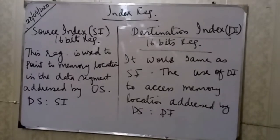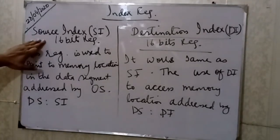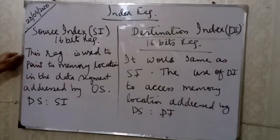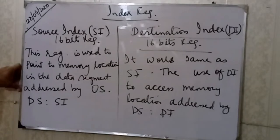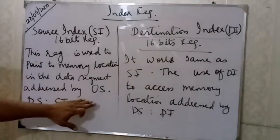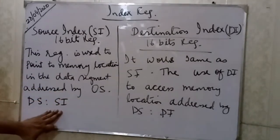Now let's see the index registers. The first is the source index register, SI, which is 16 bits. SI is used to point to memory locations in the data segment. It is addressed by the operating system and points to the data segment's source location for data operations.